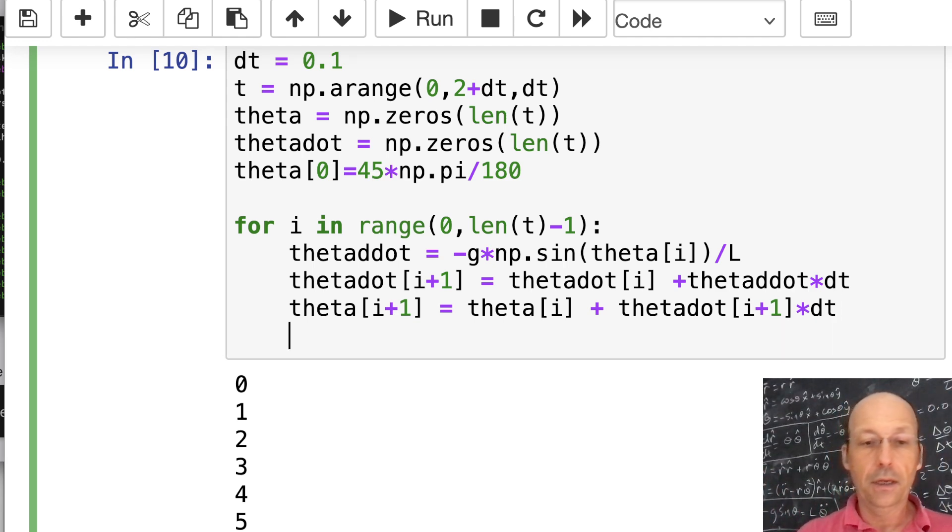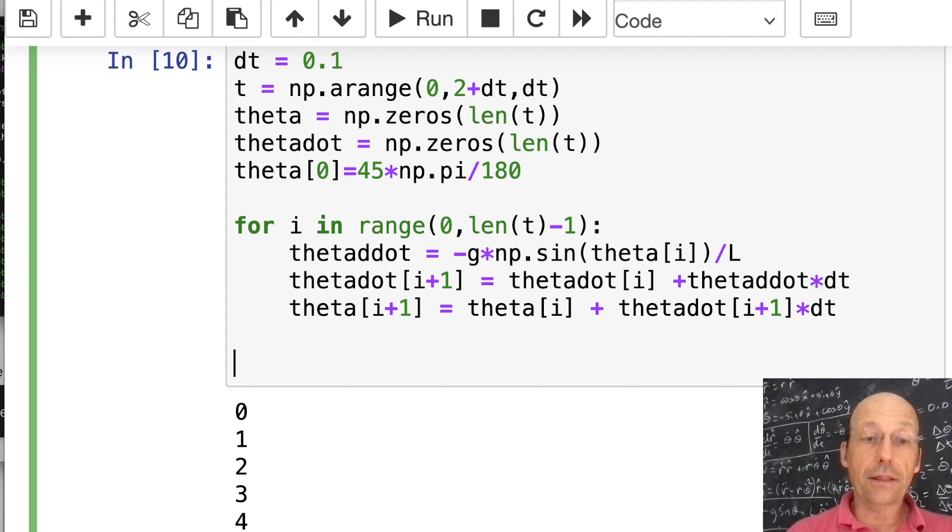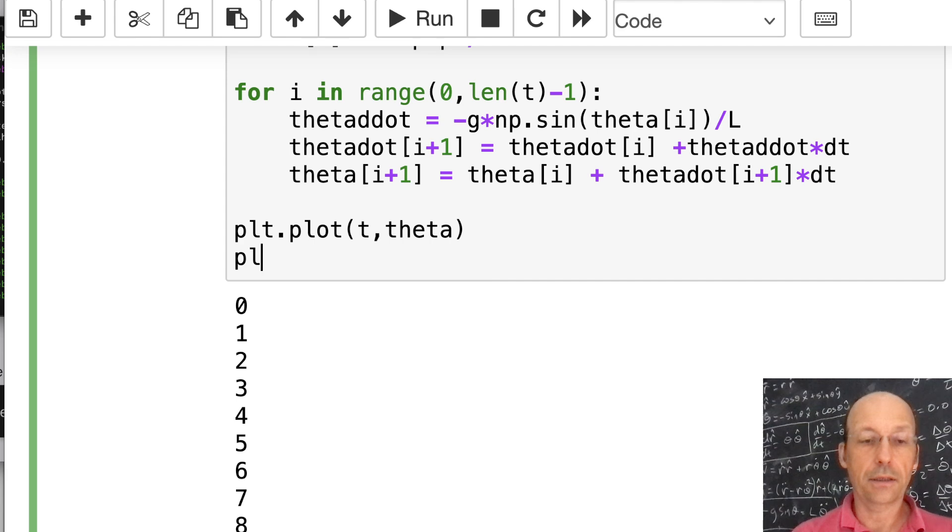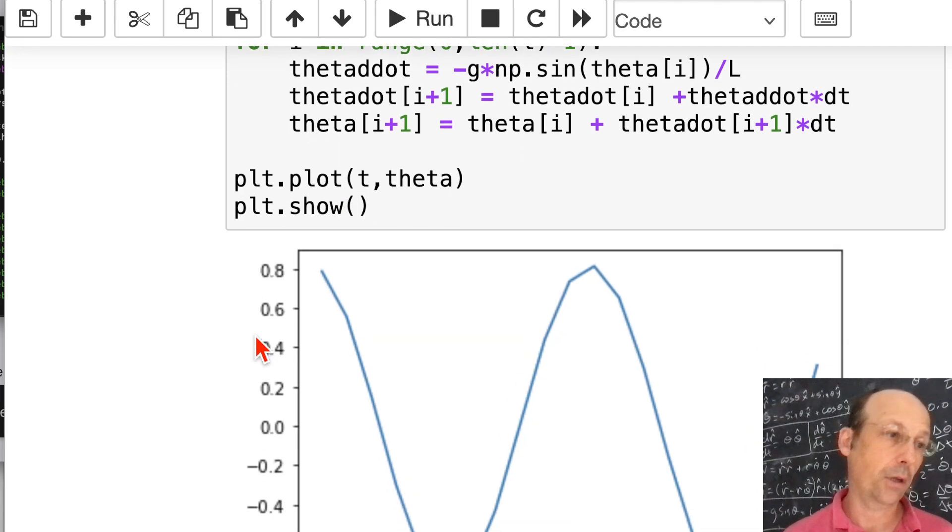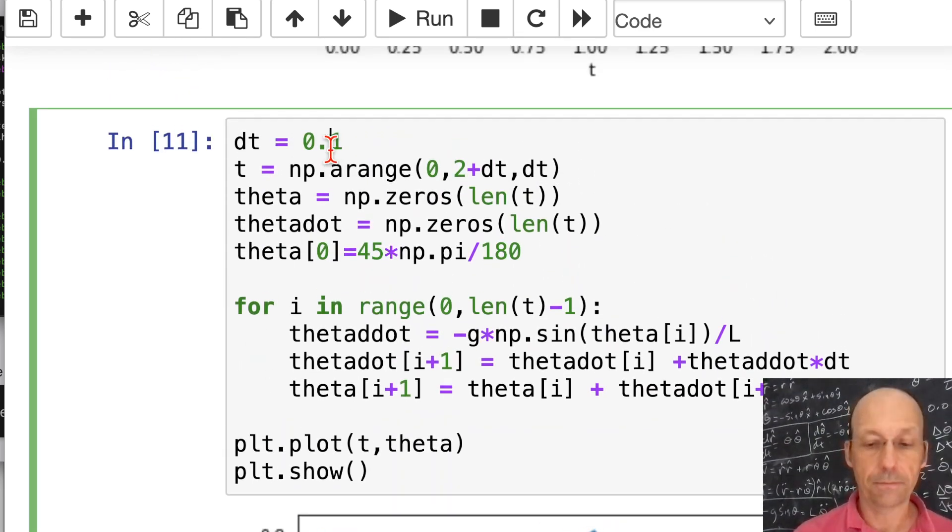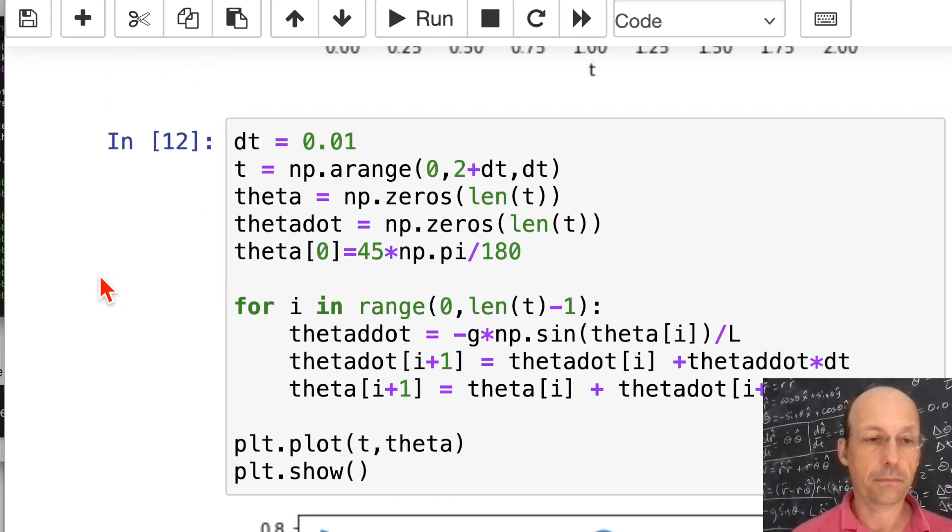Now we're going to plot those. I'm going to do it in here. So let's do plt.plot. I'm not going to put the labels in there. t, theta. And then plt.show. And there we go. It works. And again, I can make my dt a little bit smaller. Works.